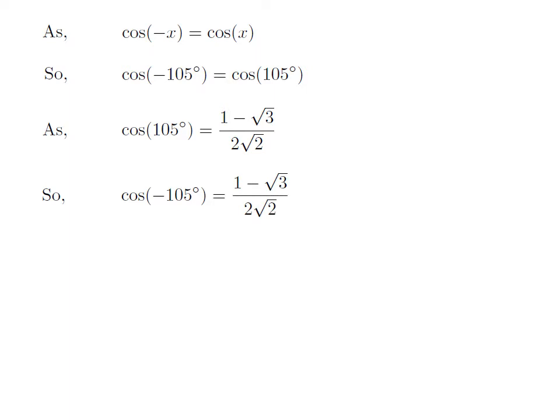So, we get the value of cosine of minus 105 degrees is equal to 1 minus square root of 3 upon 2 into square root of 2.